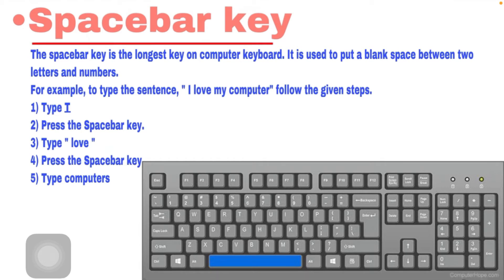For example, if you want to write 'I love my computer', first you have to press I. Then you have to go to the space bar key and press it. After pressing the space bar key, some space is shown on the monitor. After getting that space, you write 'love'. Then again press the space bar key for getting another space, then write the next word. So in this way, if you want to get any type of space between any characters, you have to press the space bar key.